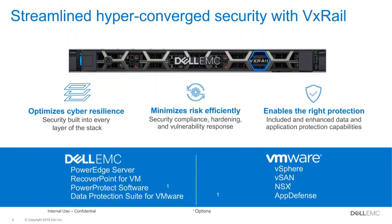We want to make sure we've got the right protection — not only application protection capabilities, but protection of the ecosystem and supply chain to ensure that what we build in the factory is exactly what shows up on your dock in your data center. We also have VMware software — vSphere, vSAN, optionally NSX — and we support the AppDefense layer in vSphere Platinum with our VxRail offerings.